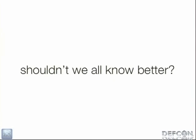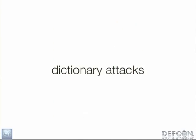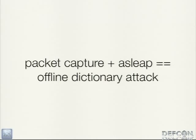We want to look at this protocol so that we can attack these two points. Shouldn't we all know that this isn't secure? The Internet is full of articles about PPTP authentication being very susceptible to attack. The problem is that all of these articles are about dictionary attacks — if you get a packet capture for a PPTP VPN connection or a WPA2 wireless inter-authentication capture and combine it with a tool like asleap, you've got yourself an offline dictionary attack.